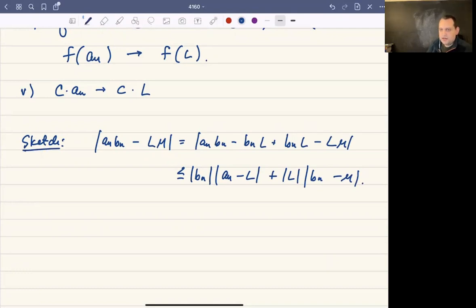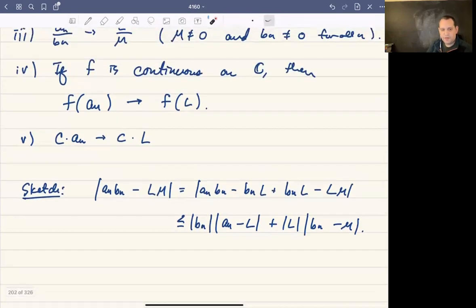Since b_n converges, it's going to be bounded for reasons we've talked about. L is bounded—it's a complex number. Anyway, I'll let you fill in all the details there, but those are the limit laws that we have. All the usual laws for limits apply.